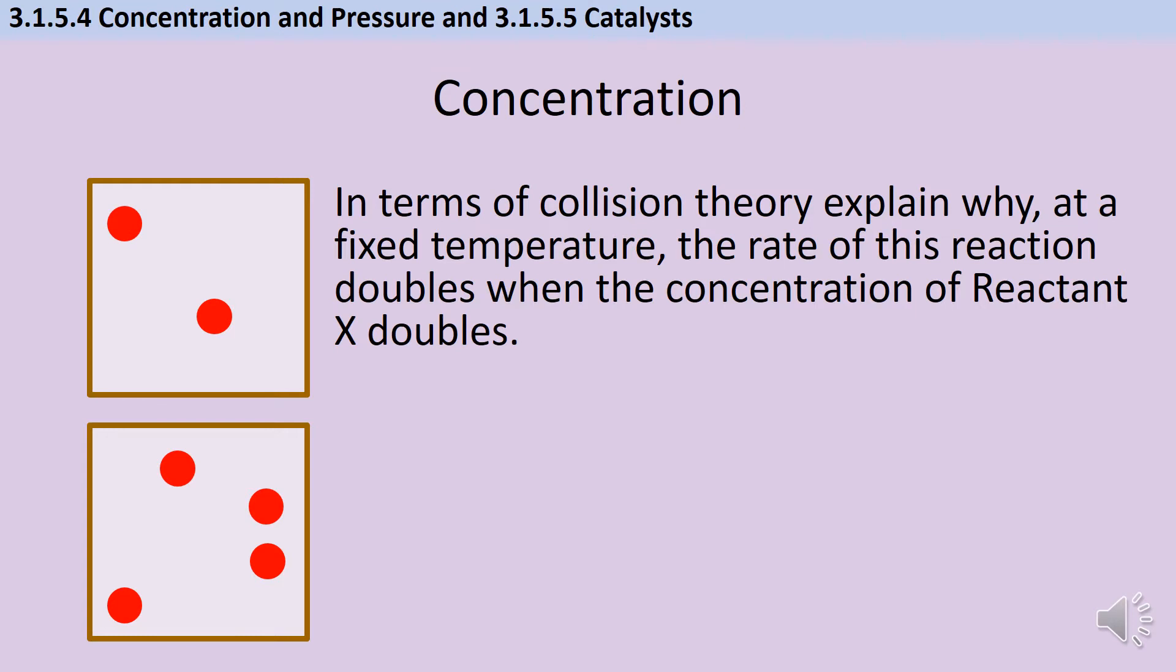The key difference when we get to A-level tends to be that we're now asked to do it in a quantitative way. So often you'll have a question like this one, which asks us to explain why, at a fixed temperature, the rate of this reaction doubles when the concentration of a reactant doubles. And often people lose out on the mark because they miss the significance of that doubling.